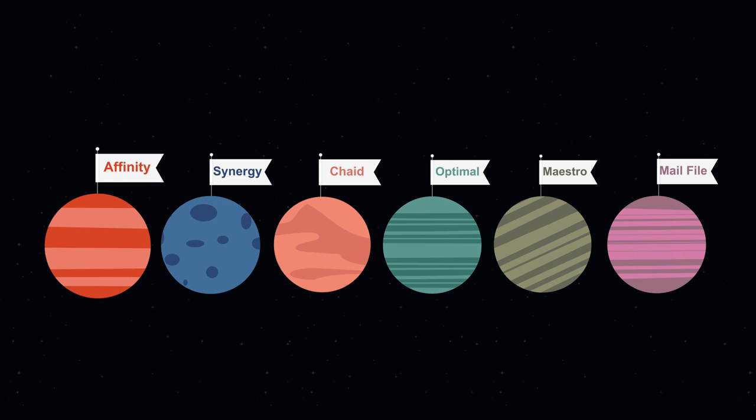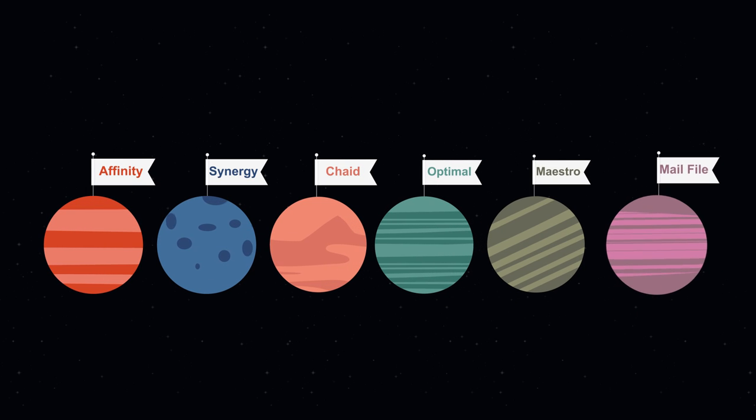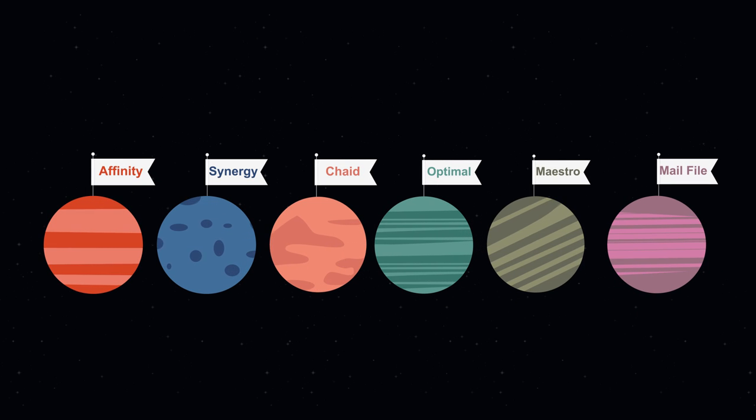Each model has equal opportunity to select from the Abacus universe, meaning names are picked up that could have been missed by individual models, allowing you to mail deeper.